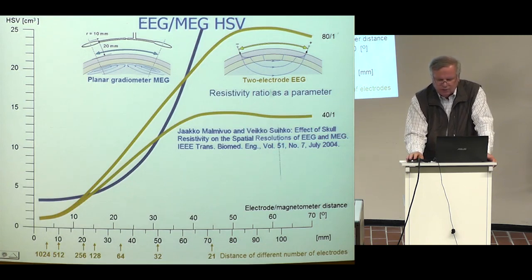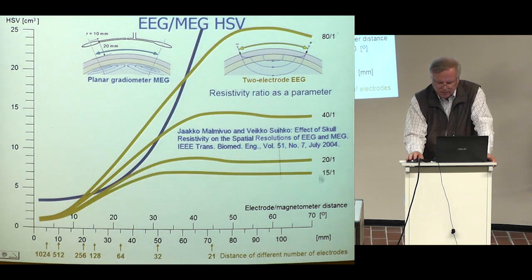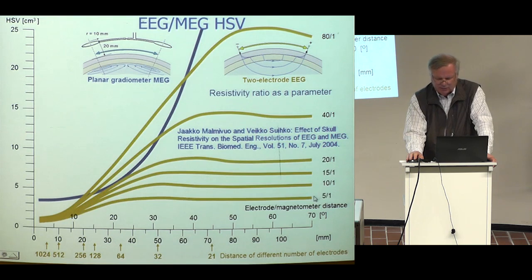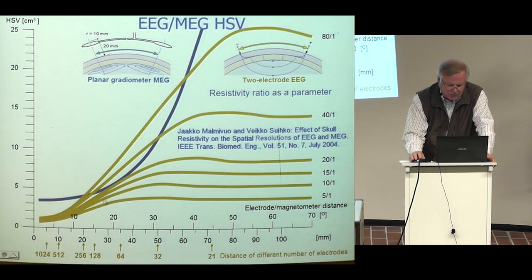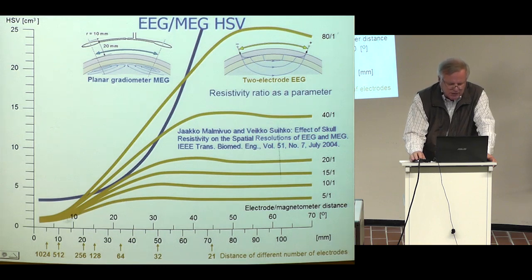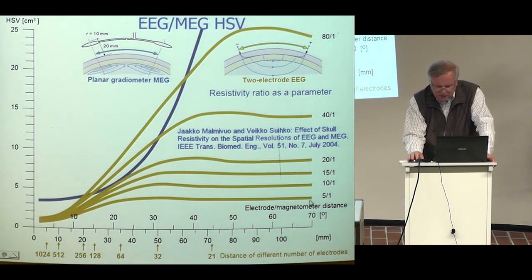Magnifying further: here is MEG planar gradiometer spatial resolution, and here is EEG with 15-to-1 and EEG with 5-to-1. EEG is clearly better. Here are the electrode distances in real cases: 128 electrodes equally spaced, 256 electrodes, 512 electrodes, and 1000 electrodes. You see that EEG has clearly better spatial resolution than MEG. This is the truth, but not the whole truth — the magnetometer coil can be made smaller, from 10 to 1 mm, and even placed closer to the scalp.